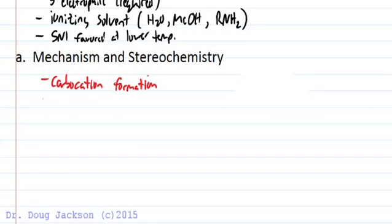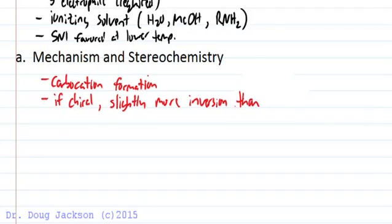We get carbocation formation and if we have a chiral center, we get slightly more inversion than retention of configuration. And this is due to the proximity effect. So we'll look at that as well.